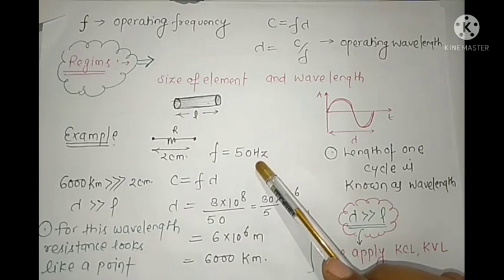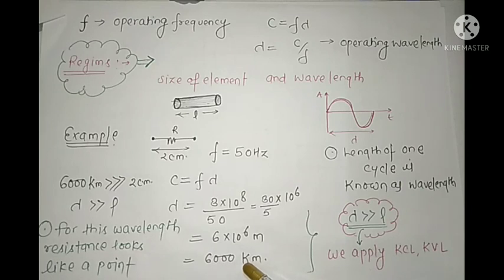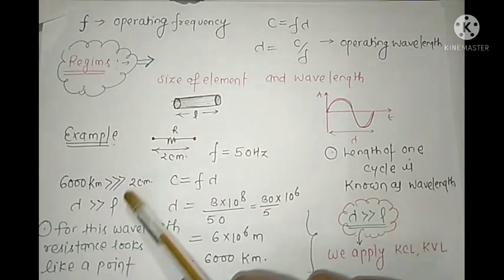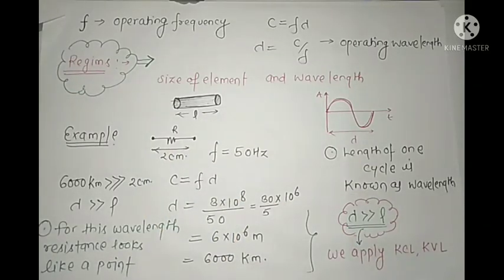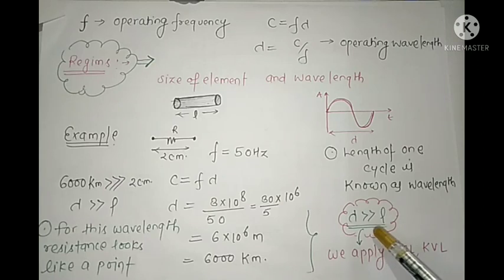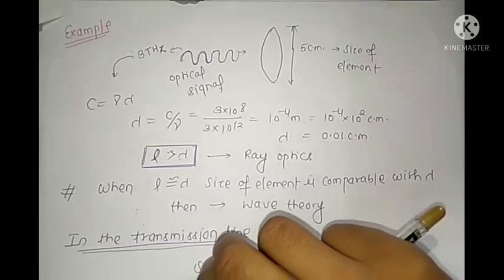From the calculation, the operating wavelength at 50 Hz is about 6000 km. Comparing: 6000 km is very much greater than 2 cm, so lambda is much greater than the size of element L. When you get this condition — lambda much greater than L — you always apply network theory: KCL and KVL are applicable only for this condition.